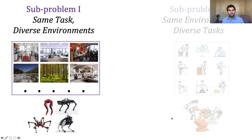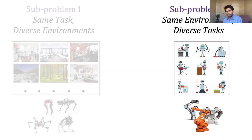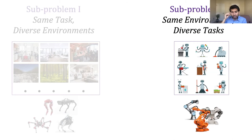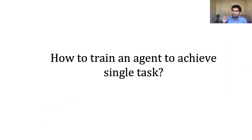This was the study on the first sub-problem — same task, diverse environments. Now let's change gears to sub-problem two: same environment, diverse tasks. This is a more challenging problem because generalizing to diverse tasks is closer to what we'd call intelligence — solving new goals. Before discussing this, let me describe how people train an agent to solve a single task today, since this is mostly what people do.